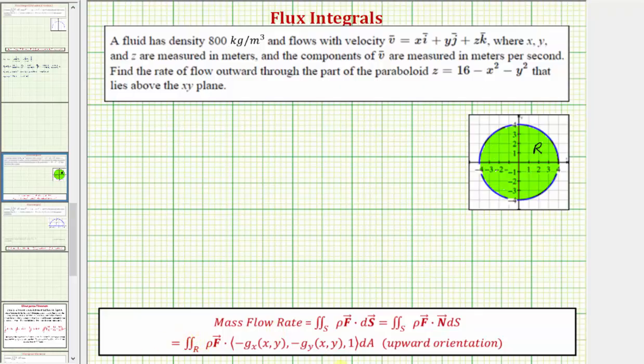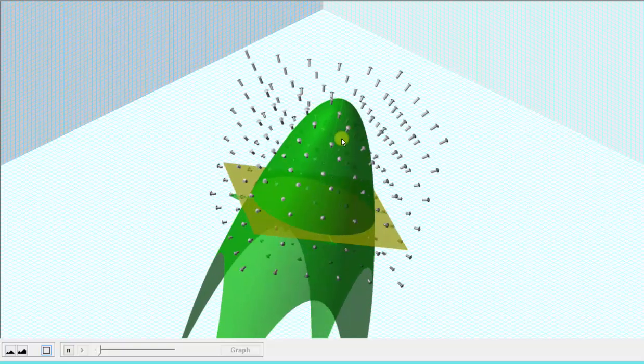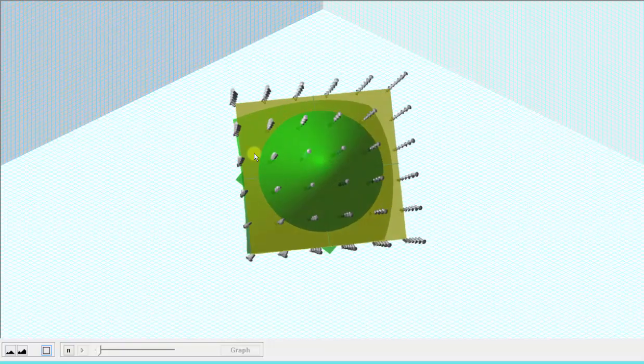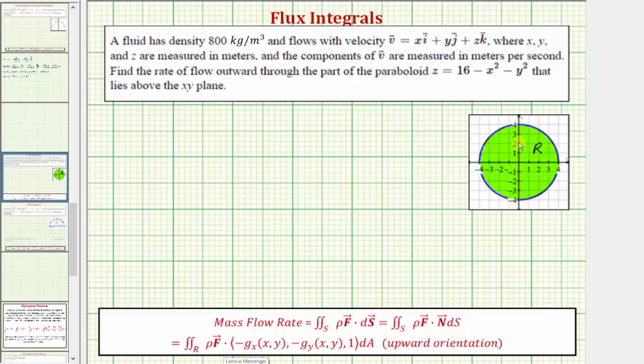Let me go back to our graph just for a moment. If we look down on the x-y plane, notice how the region R is this circle here, which is also graphed here on the side.